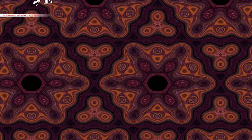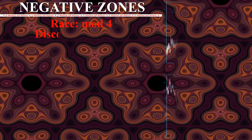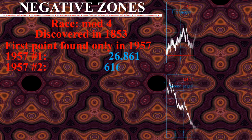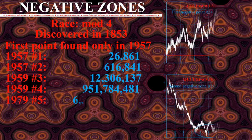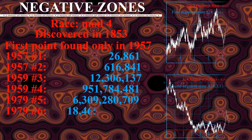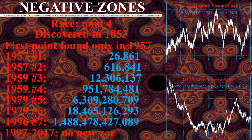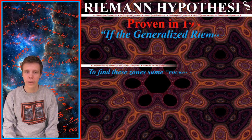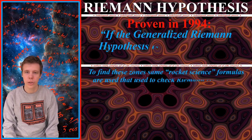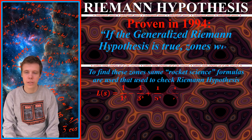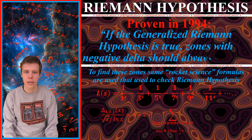Even though Chebyshev's bias had been discovered over 165 years ago, no negative zones for delta were known up to 1957. Most of them are located far away. It was proven in 1994 that if the generalized Riemann hypothesis is true, zones with negative delta should always exist.